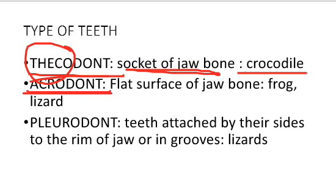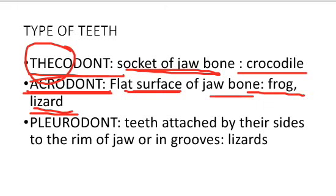In acrodont dentition, the teeth are embedded on the flat surface of the jaw bone. The examples are frog and lizard. So in acrodont, the jaw bone surface is flat and the teeth are present on that flat surface.